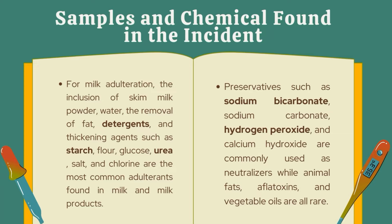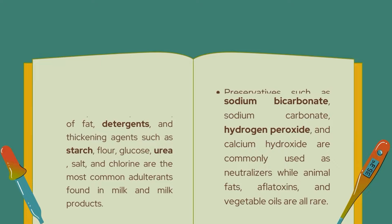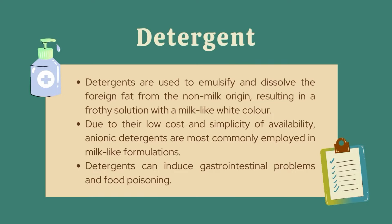Preservatives such as sodium bicarbonate, sodium carbonate, hydrogen peroxide, and calcium hydroxide are commonly used as neutralizers, while animal fat, aflatoxin, and vegetable oil are also used. The first adulteration is detergent. Detergents are used to emulsify and dissolve foreign fat from non-milk origin, resulting in a frothy solution with a milk-like white colour. Due to their low cost and availability, anionic detergents are most commonly employed in milk-like formulations. Detergents can induce gastrointestinal problems and food poisoning.